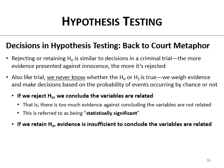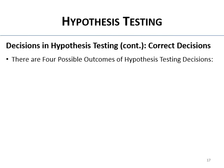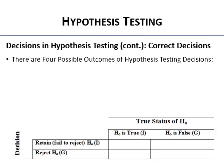If we retain the null, evidence is insufficient to conclude the variables are related — we didn't prove the null. That's why it's worded so awkwardly; this means 'not statistically significant.' There are four possible outcomes of hypothesis testing decisions. On the left is whether in your study you decided to retain or reject the null. On the top is the true status of the null — which you don't know.